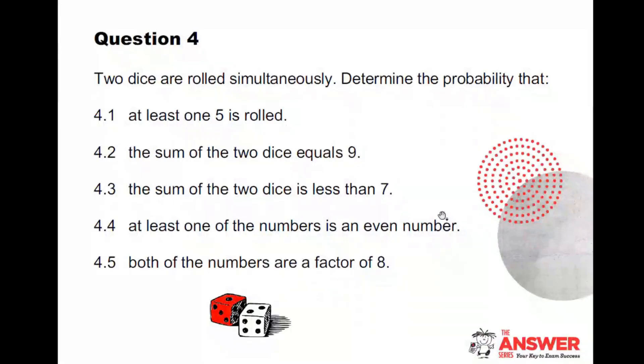Question four. Two dice are rolled simultaneously. Determine the probability that at least one five is rolled, the sum of the two dice equals nine, the sum of the two dice is less than seven, at least one of the numbers is an even number, both of the numbers are a factor of eight.